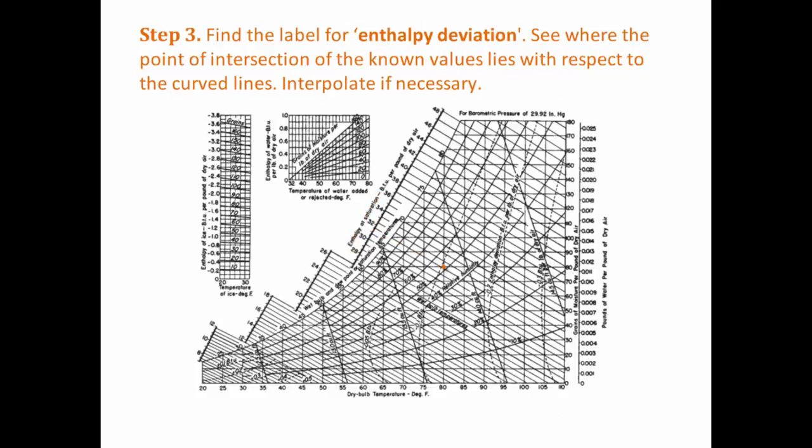To find the true enthalpy, we need to use the enthalpy deviation. The chart has a label for enthalpy deviation. It's shown by dashed curves. The orange dot happens to lie on one of the curves, but if it didn't we would have to interpolate between them to find the enthalpy deviation. In this case, it's minus 0.1 BTU per pound of dry air.